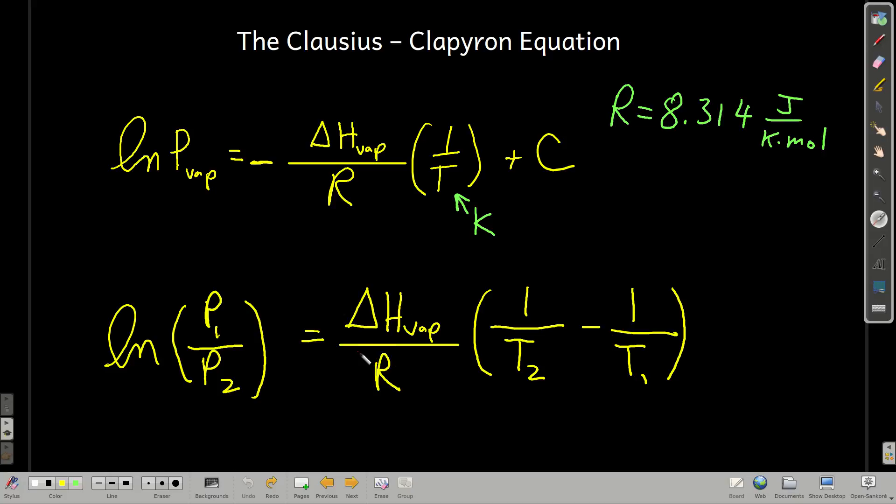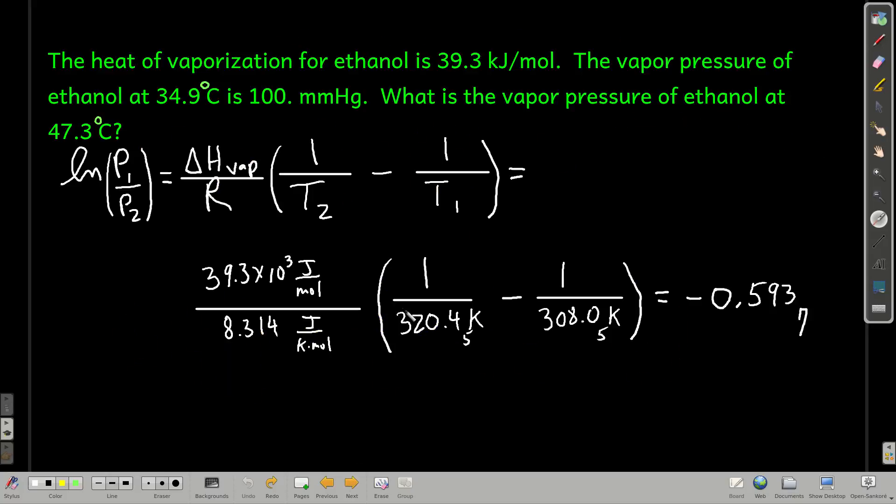What this lets us do is, one of the things we can do is: if we know the vapor pressure at one temperature, we can find the vapor pressure at a second temperature. Don't get these mixed up. It's P1 over P2, and it's 1 over T2 minus 1 over T1. Also, if we knew the vapor pressure at two different temperatures, we can find the heat of vaporization. So memorize the Clausius-Clapeyron equation or put it on your card.